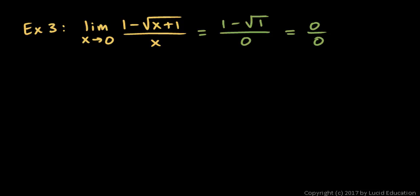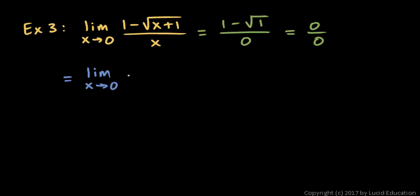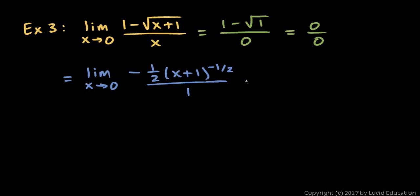So we can apply L'Hôpital's rule and take the limit as x approaches 0 of the derivative of the numerator over the derivative of the denominator. The derivative of 1 is 0, and the derivative of the square root term — thinking of it as (x+1) to the power of 1/2 — uses the power rule: (1/2)(x+1) to the power of negative 1/2. The derivative of the denominator is just 1.